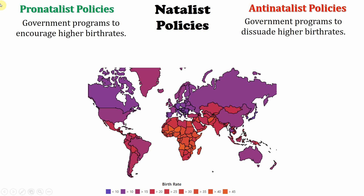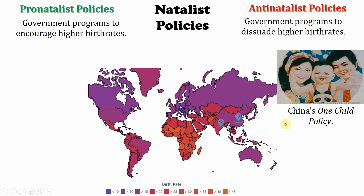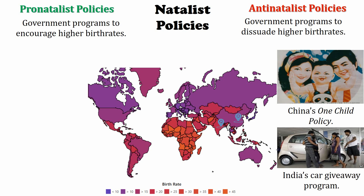Pronatalists encourage higher birth rates; antinatalists dissuade them. Two of the best examples of antinatalist policies are China and India — the two most populated countries in the world with prominent policies. In China, from the late 70s until recently, the one-child policy meant families going over one child would be punished with a tax-laden policy. India was giving away cars and products to encourage fewer children, since both countries have over 1.5 billion people. India is set to be the most populated country by 2050. China's one-child policy has now become a two-child policy.